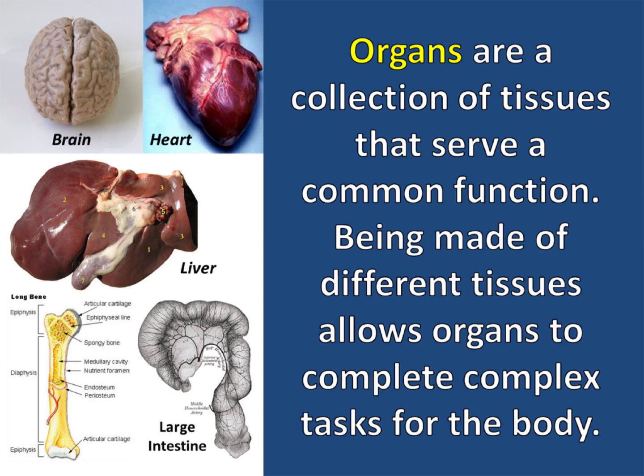Organs are a collection of tissues that serve a common function. Being made of different tissues allows organs to complete complex tasks for the body. The brain, heart, liver, bones, and intestines are all examples of organs found at this level.